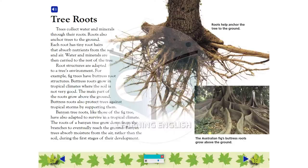Banyan tree roots, like those of the fig tree, have also adapted to survive in a tropical climate. The roots of a banyan tree grow down from the branches to eventually reach the ground. Banyan trees absorb moisture from the air, rather than the soil, during the first stages of their development.